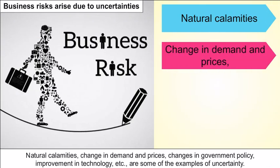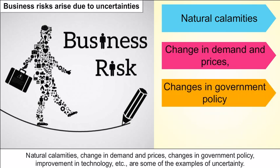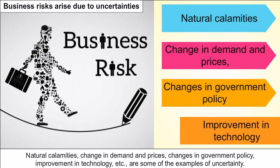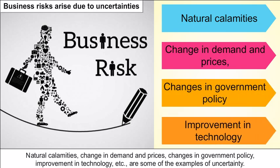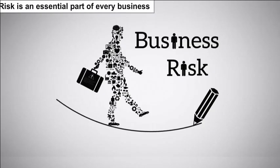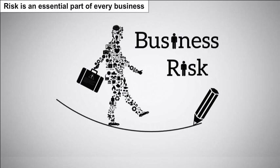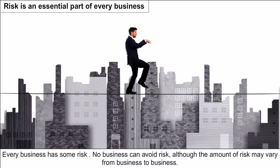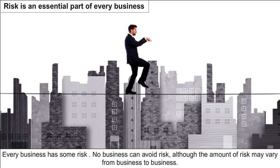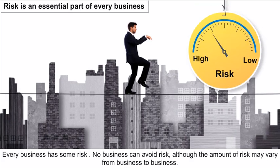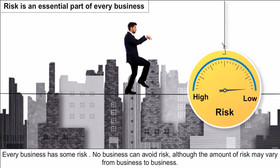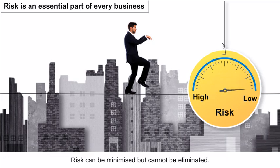Natural calamities, changes in demand and prices, changes in government policy, and improvements in technology are some examples of uncertainty. Risk is an essential part of every business; no business can avoid risk, although the amount of risk may vary from business to business. Risk can be minimized but cannot be eliminated.